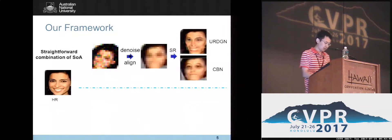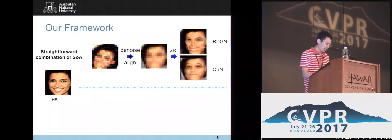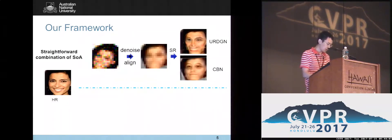Here is a naive scenario. We employ BM3D to reduce noise and then align the denoised low-resolution faces. Finally, state-of-the-art face hallucination methods are employed, such as URDGN and CBN. Notice that obvious artifacts appear in the final results because the low-resolution facial patterns have been distorted by the denoise and alignment procedures.